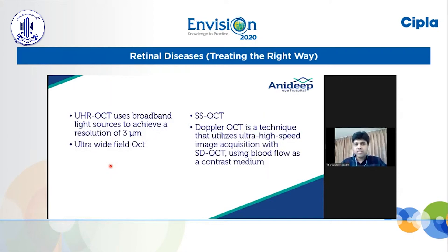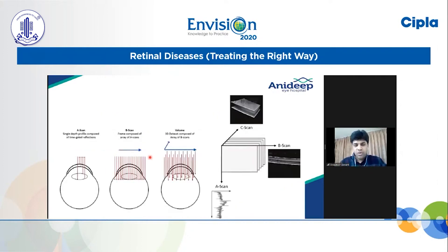Newer versions are coming — ultra-high resolution OCT, ultra-wide-field OCT, and also a Doppler OCT, but that's beyond the scope of this presentation. Once we have a wavelength of light hitting an ocular structure, we get an A-scan, similar to an A-scan used for biometry. The B-scan in OCT is different from the B-scan of ultrasound imaging — here the B-scan in OCT means multiple A-scans are put together to get a 2D image.